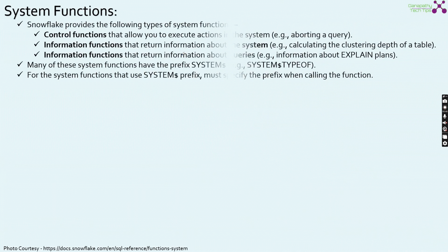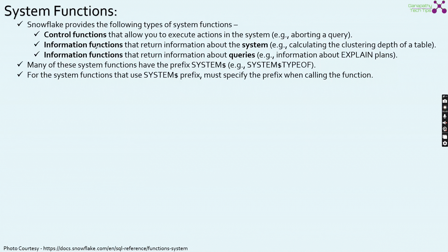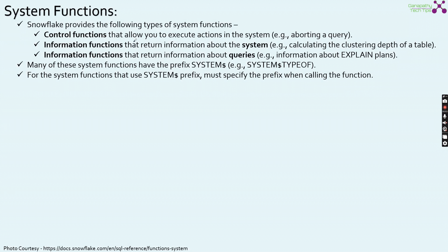Let us first start with system functions in Snowflake. Snowflake provides the following types of system functions. One is the control functions that allow you to execute actions in the system, for example, aborting a query.